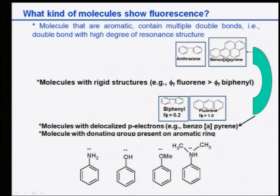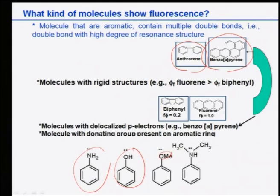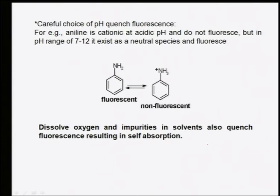Molecules that can show fluorescence include benzene, anthracene, benzopyrene, and groups such as amine, alcohol, methyl, and oxymethyl. pH selection is important: aniline is cationic at acidic pH and does not fluoresce, but at pH 7 to 12 it acts as a neutral species and does fluoresce. Dissolved oxygen and impurities can also quench fluorescence.